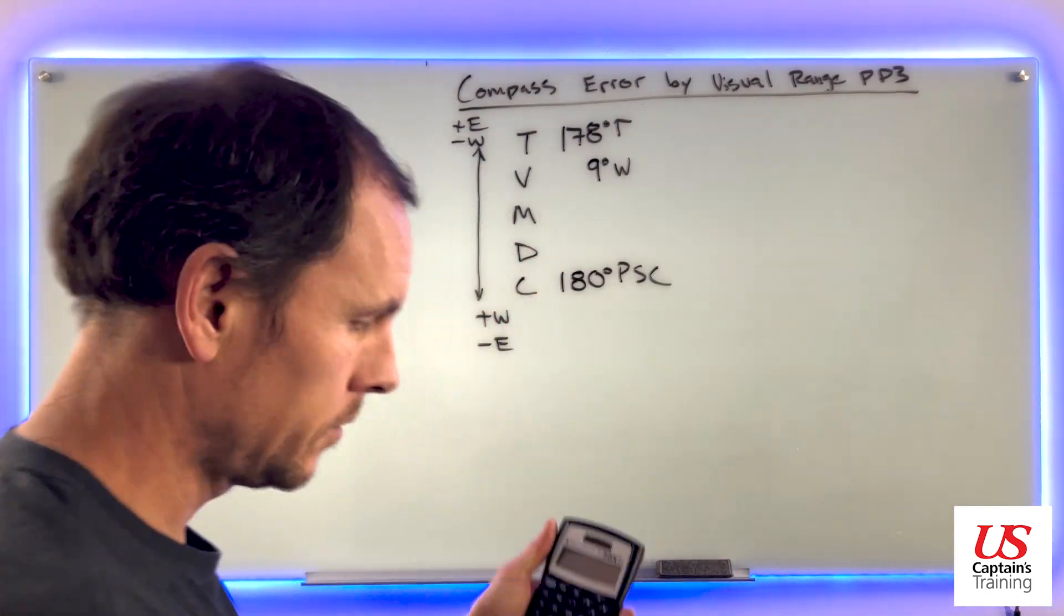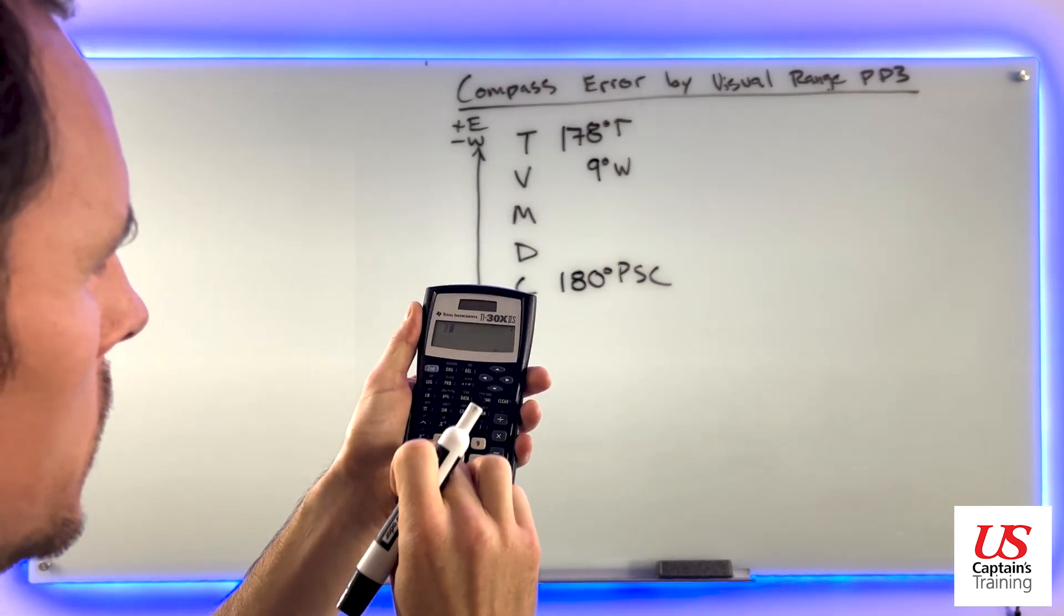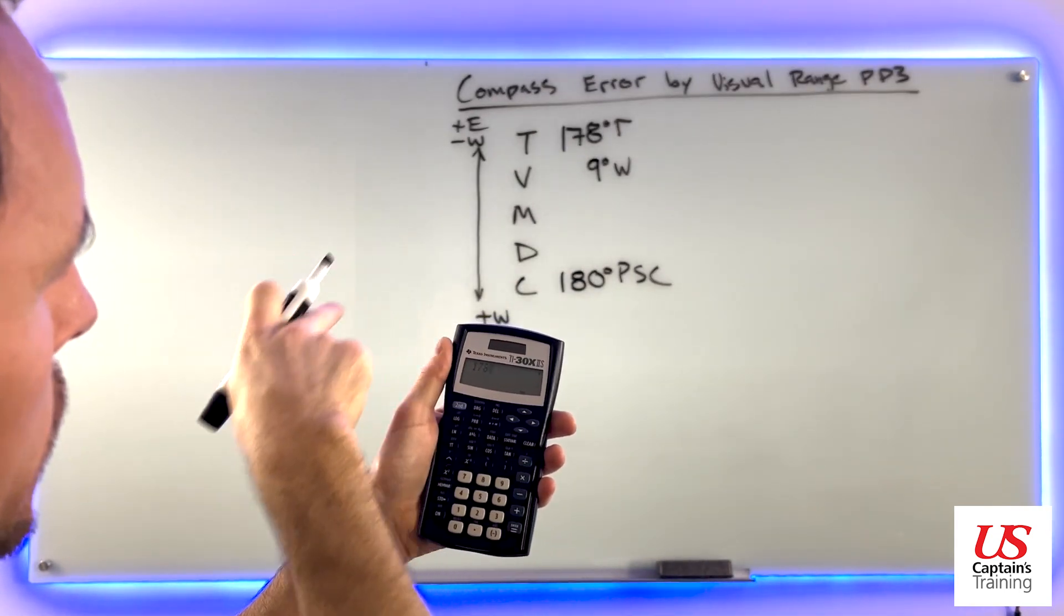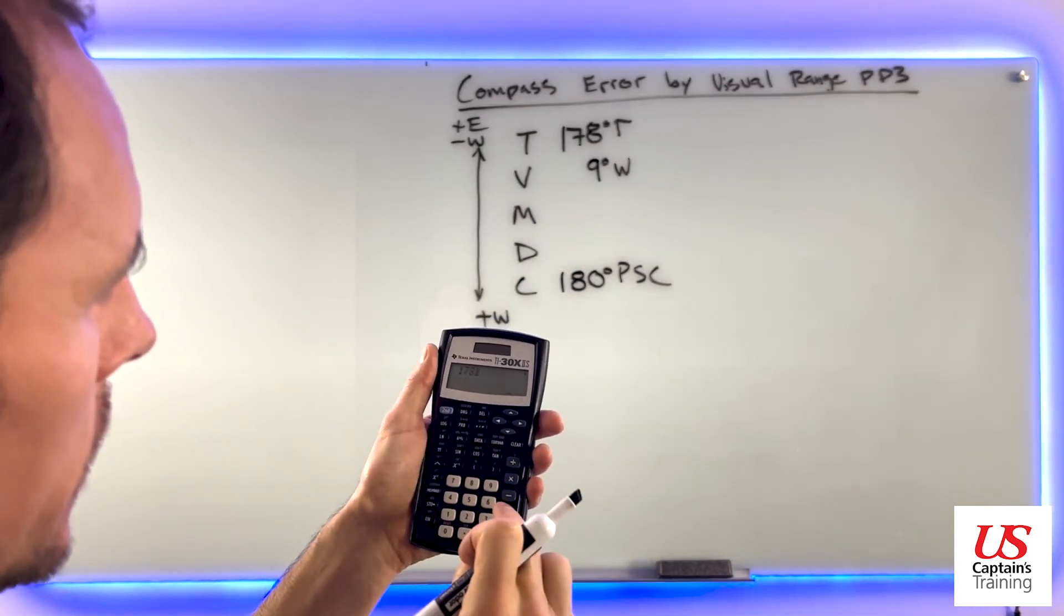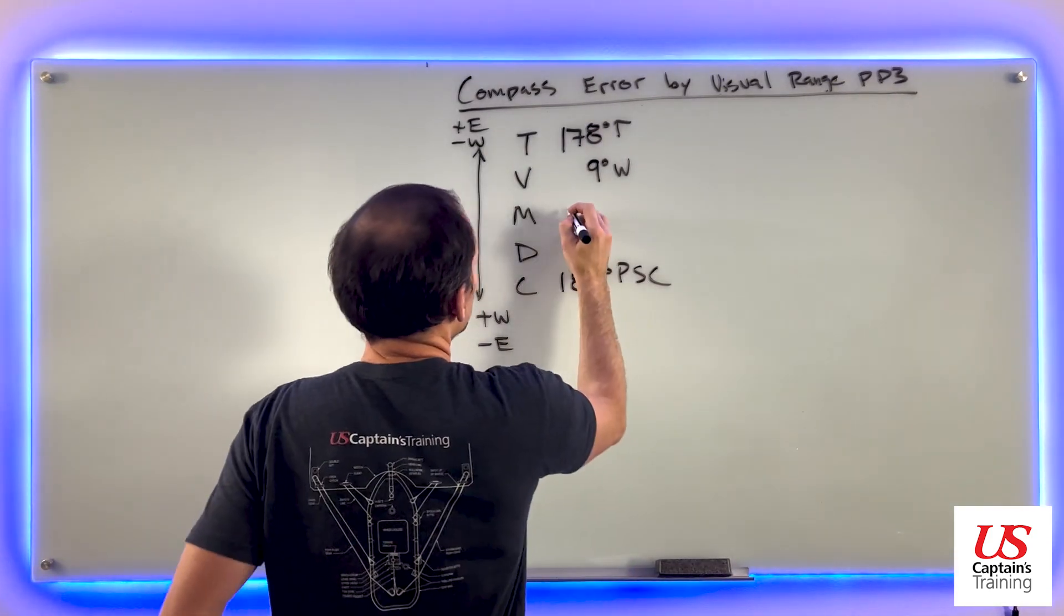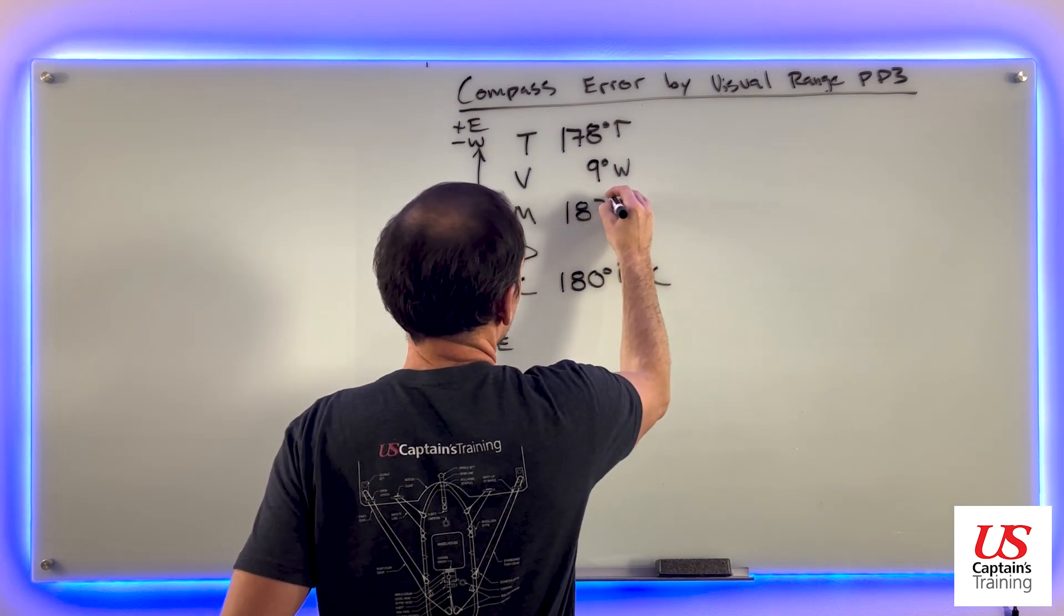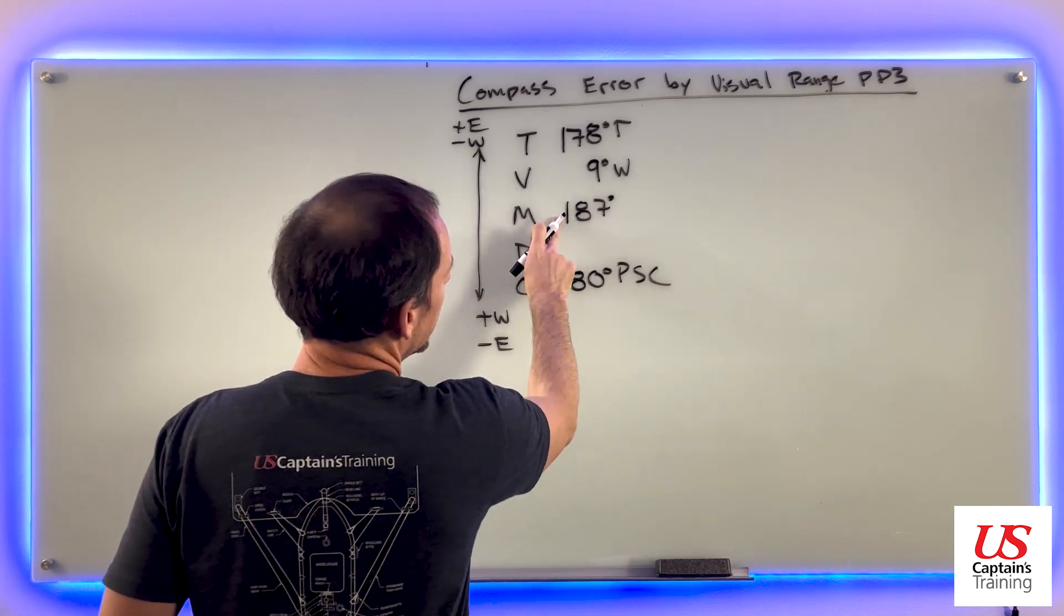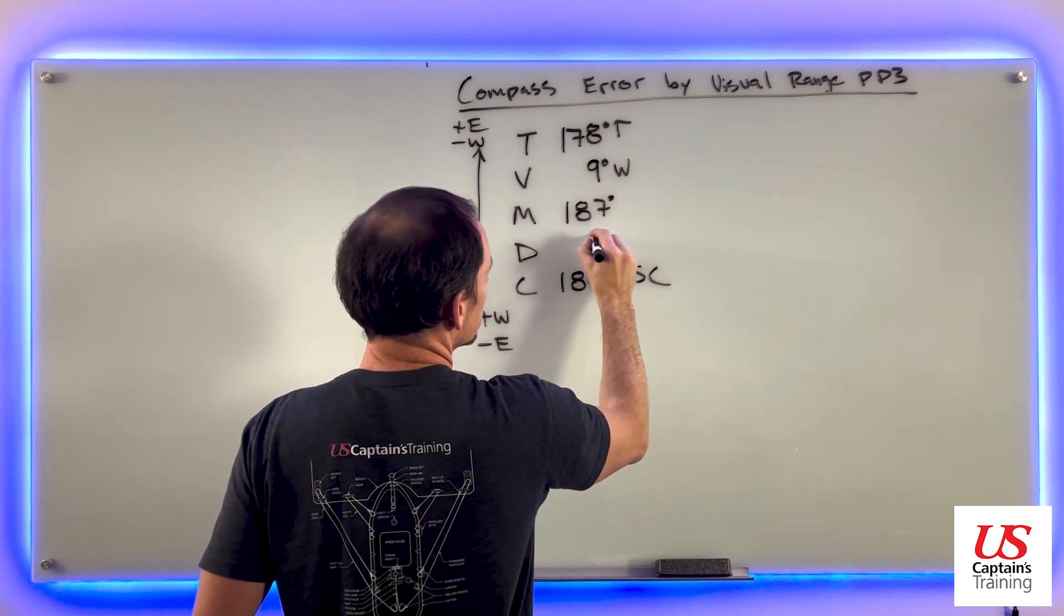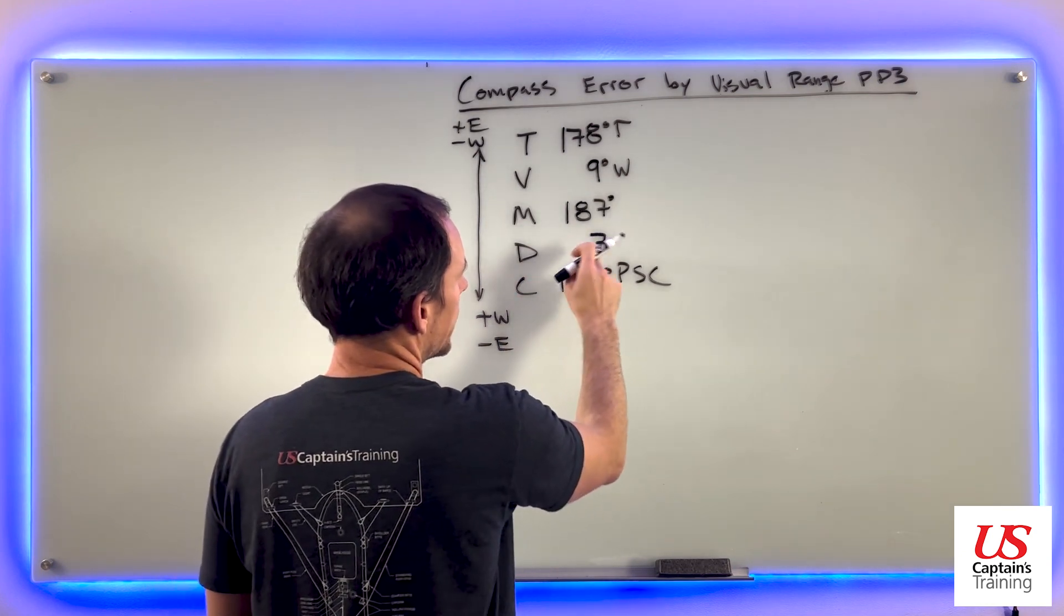So 178. And now what do we do with that 9? We're going to add west. So plus 9 equals 187. 187 degrees magnetic. So between 187 and 180, what is there? There's 7 degrees. You can just subtract them, right? 187 minus 180 is 7.